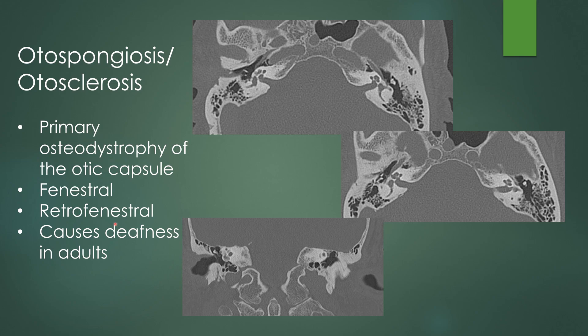In the other category, you have otospongiosis, also known as otosclerosis — a primary osteodystrophy of the otic capsule. It comes in two flavors: fenestral and retrofenestral. Fenestral is the most common, occurring at the fistula ante fenestrum, where there is conversion of cortical bone to spongy bone, which can in some cases result in pulsatile tinnitus. Here's that lucency where you should have cortical bone, between the cochlea and the semicircular canals, shown on both axial and coronal views.